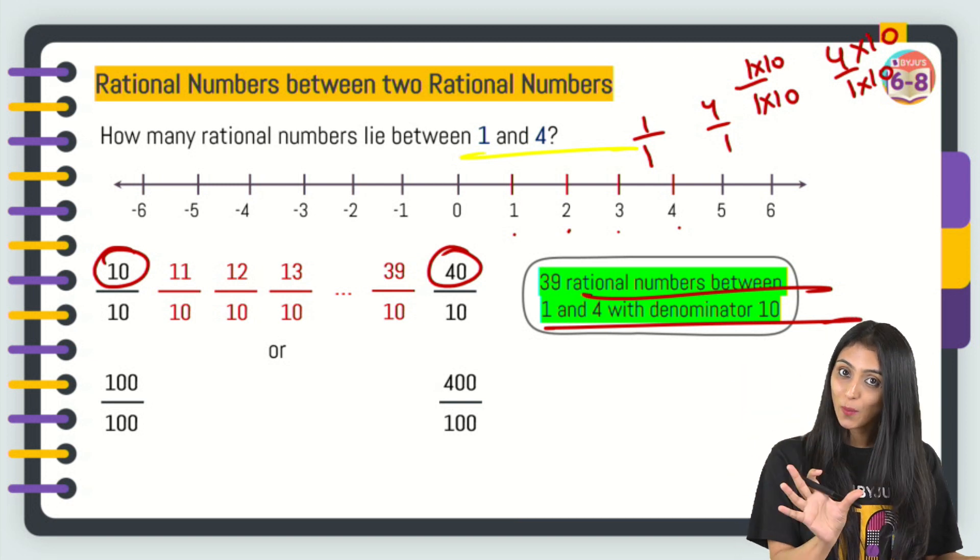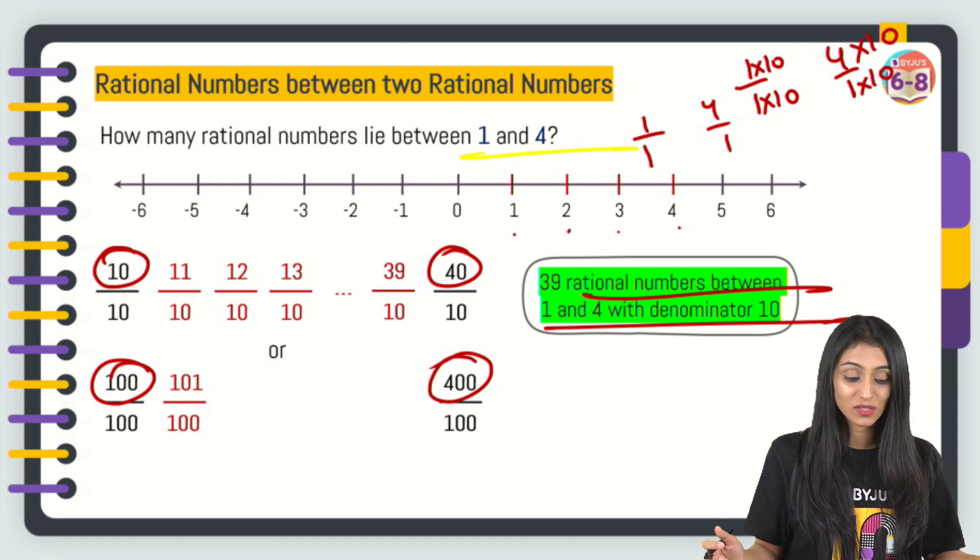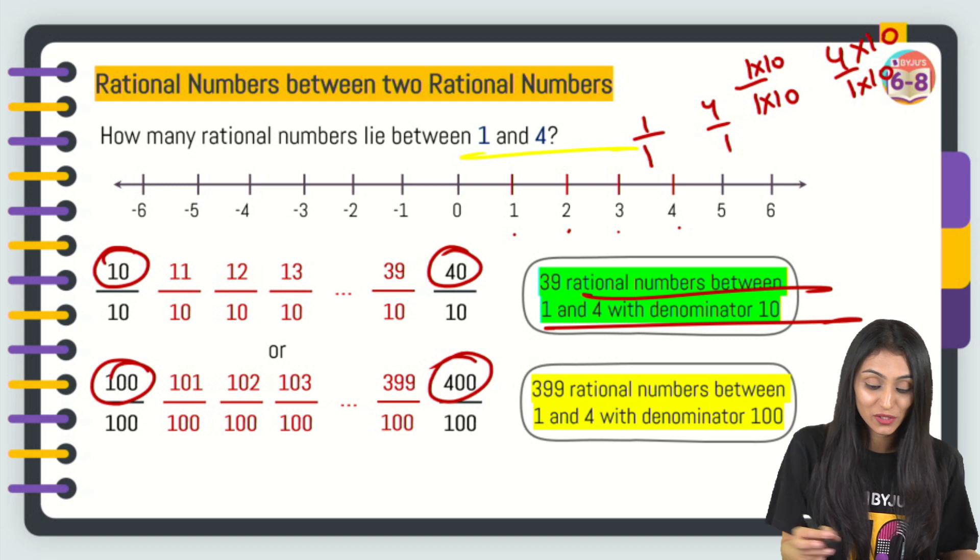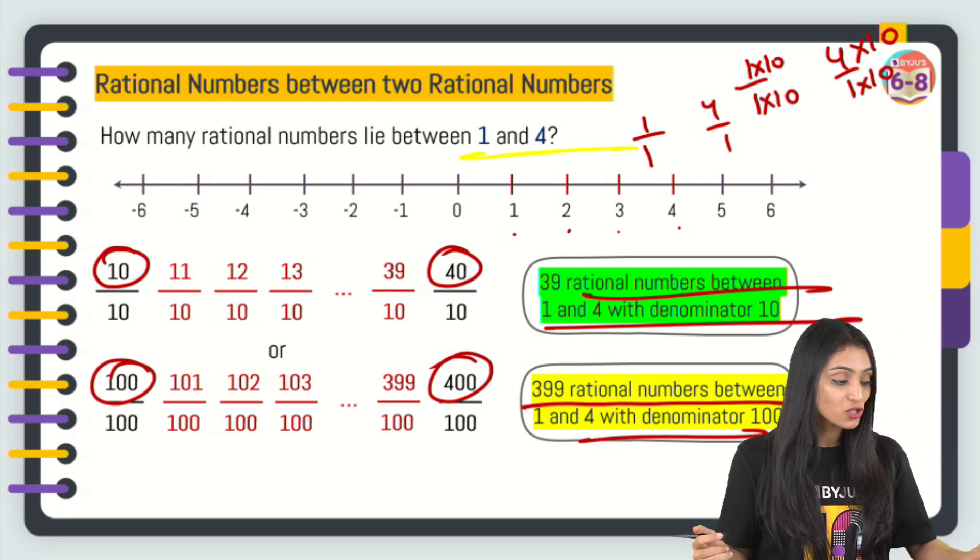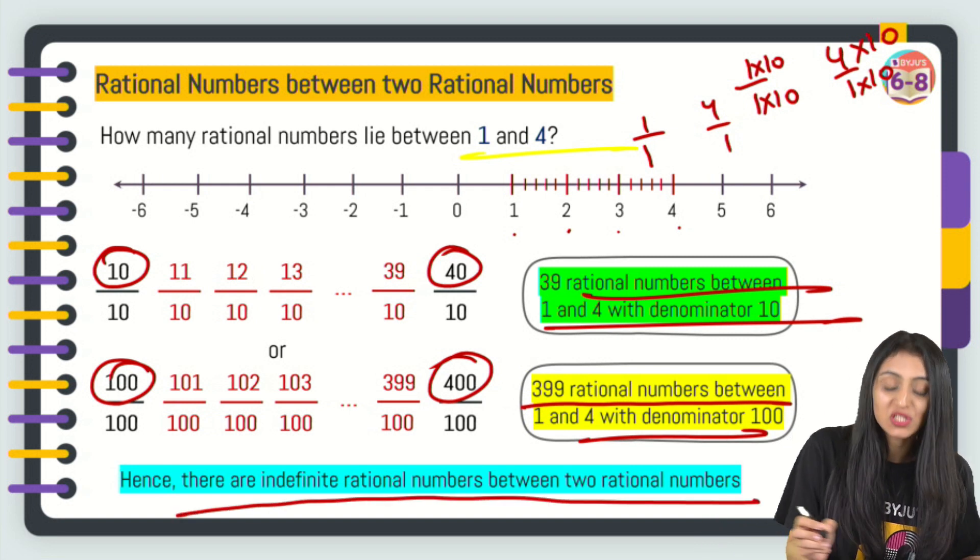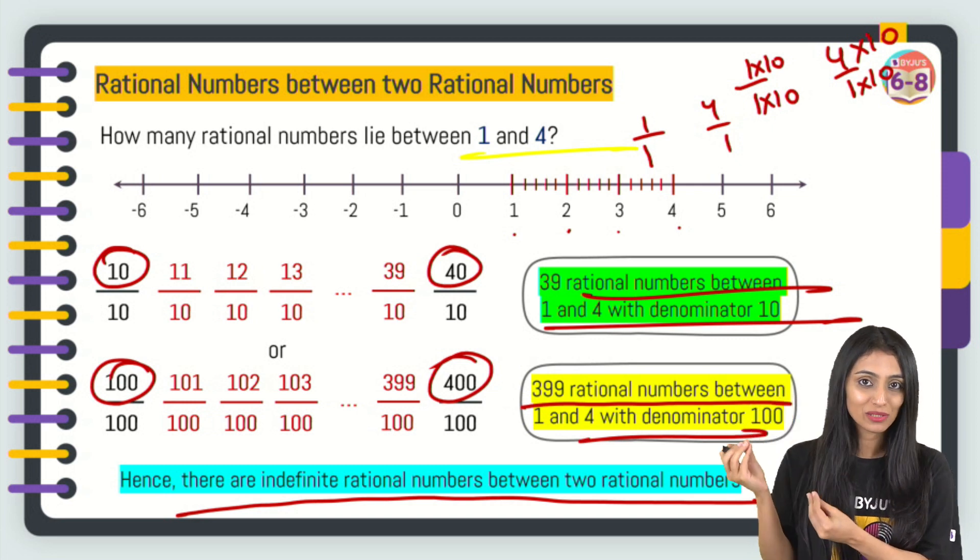Denominator is same between 100 and 400. There are so many rational numbers possible. 101 by 100, 102 by 100, 103 by 100, so on 399 by 100. So, in all 399 rational numbers are possible with denominator 100. What do we understand from here? That there are indefinite rational numbers between any two rational numbers. You just have to apply this simple thing that I did here.